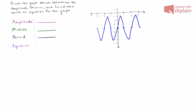Hey everyone, this is question number one from the chapter six review. Given the graph shown, determine the amplitude, midline, and period, then write an equation for the graph. I have the image of the graph sketched on the right here indicated in blue.